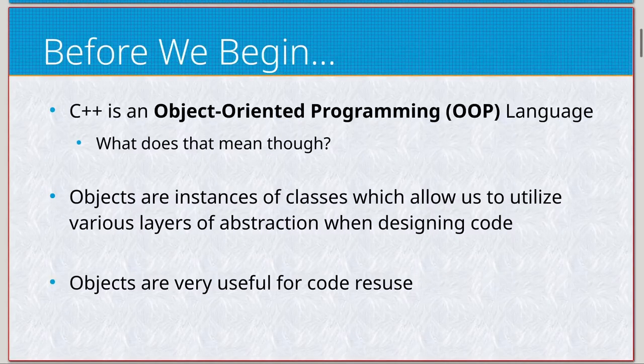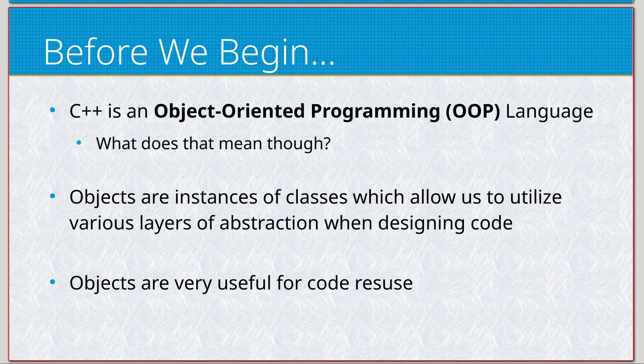So, classes. C++ is an object-oriented programming language, OOP. If you ever see OOP, that stands for object-oriented. But what does that mean?